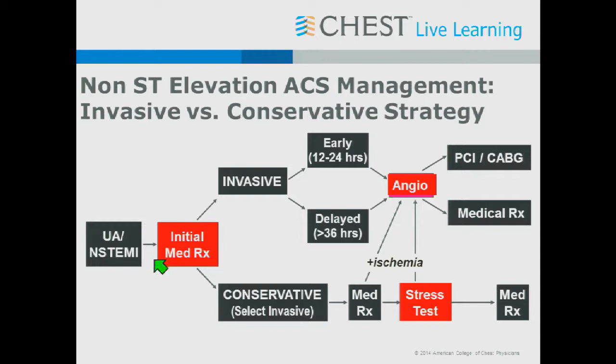Starting with unstable angina or non-ST elevation MI, everyone gets initial medical therapy, and then you have a choice: an invasive strategy or a conservative strategy. A conservative strategy means managing the patient medically, giving a period of anticoagulation, and moving forward with angiography only if they develop recurrent symptoms or high-risk features on a stress test. The early invasive approach involves angiography within 12 to 24 hours to identify and reperfuse the culprit lesion with PCI or bypass surgery.